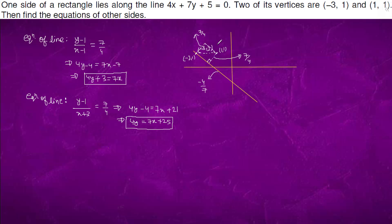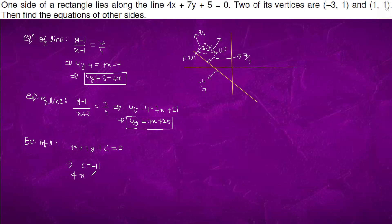The equation of the parallel line is 4x plus 7y plus c equals 0, which is passing through (1, 1), so c will come out to be minus 11. Hence the equation of the line will come out to be 4x plus 7y equals 11. So we got the equation of all the sides.